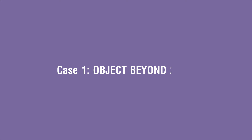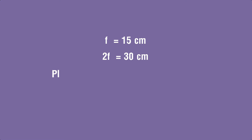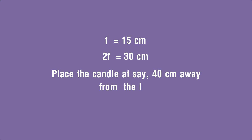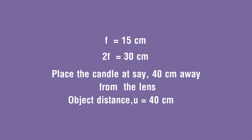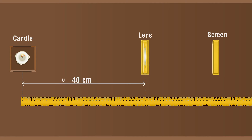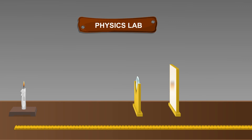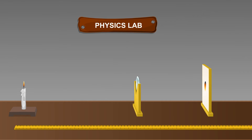Case 1 — object beyond 2f1: Choose the distance between the candle flame and the optical center of the lens to be greater than twice the approximate focal length 2f. Record this distance as object distance u in the observation table — let us take u as 40 centimeters. Move the screen placed on the other side of the lens to obtain a sharp image of the flame. Here we get a sharp image when the screen is 24 centimeters away from the lens, which is taken as image distance v.